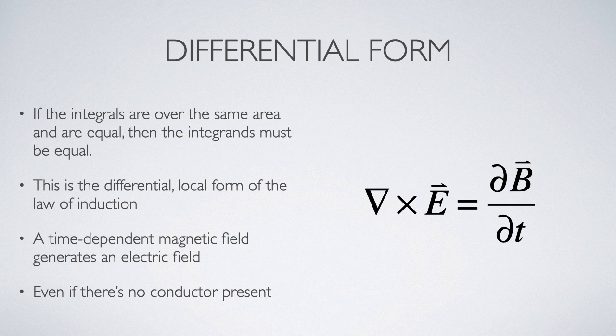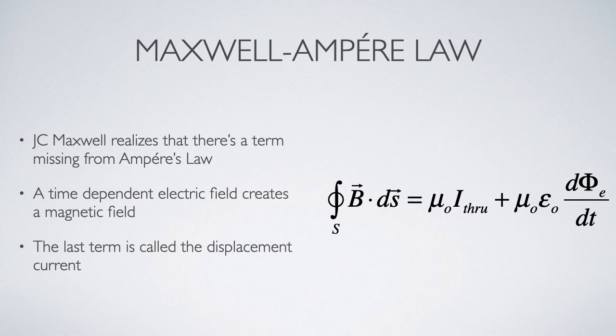In the 1860s, James Clark Maxwell realized that this should work in both directions: that if there is a time dependent electric flux, it should create a magnetic field. And so he added a second term to Ampere's law.